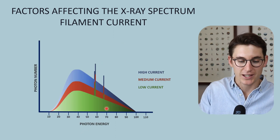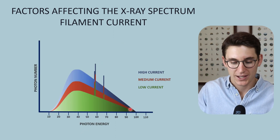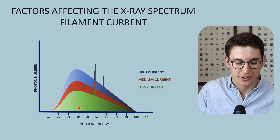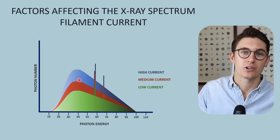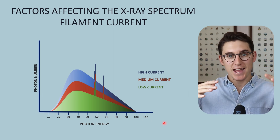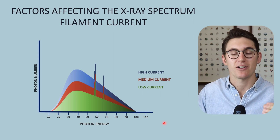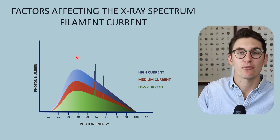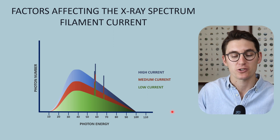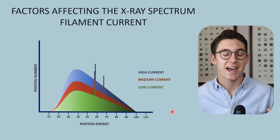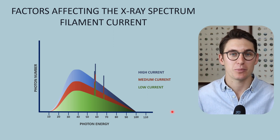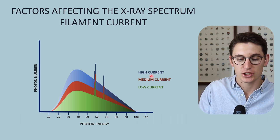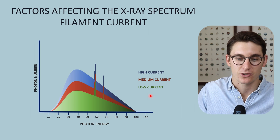Let's look at that on our x-ray spectrum graph. Here in green is a low current x-ray spectrum. As we increase that current, we increase our photon number — we are increasing the area under the curve, increasing our x-ray beam quantity. We are not changing the average energy of this x-ray beam spectrum, so a change in filament current has no effect on x-ray beam quality. This maximum photon energy does not change as our filament current increases.